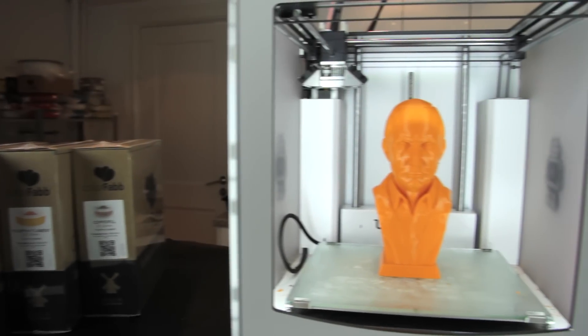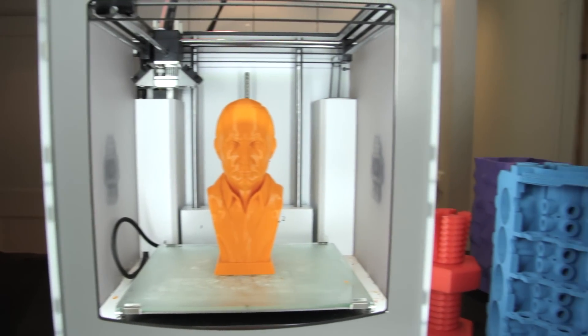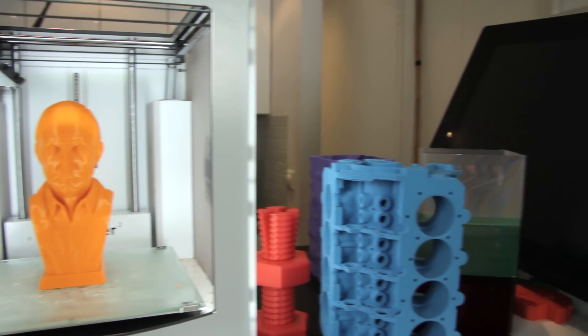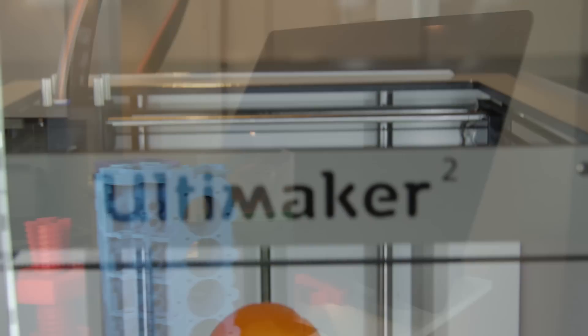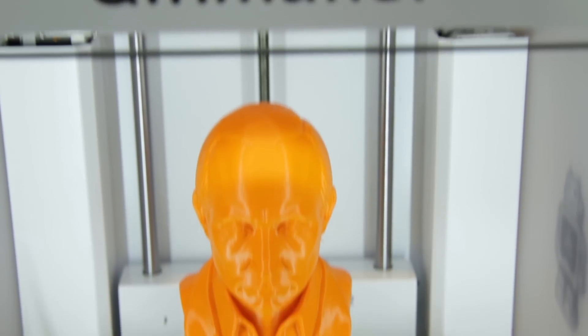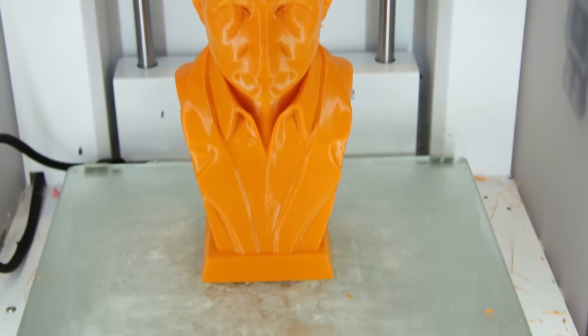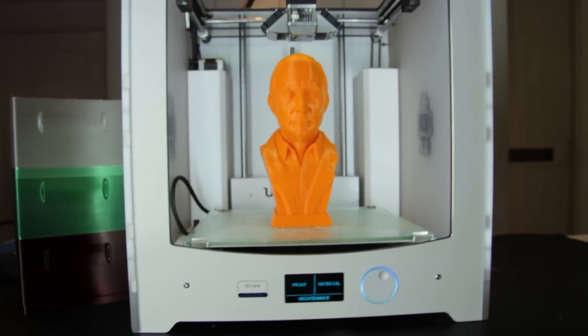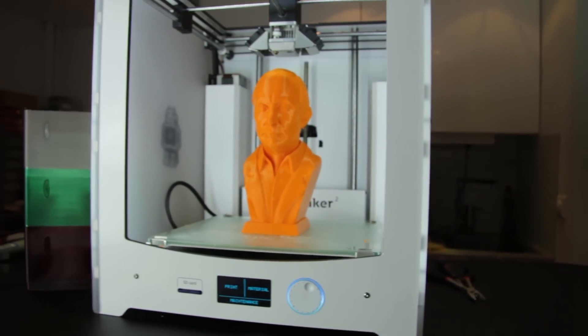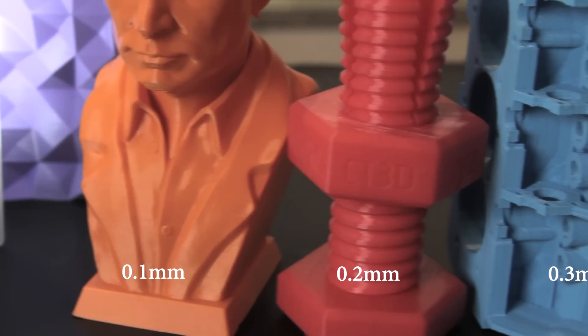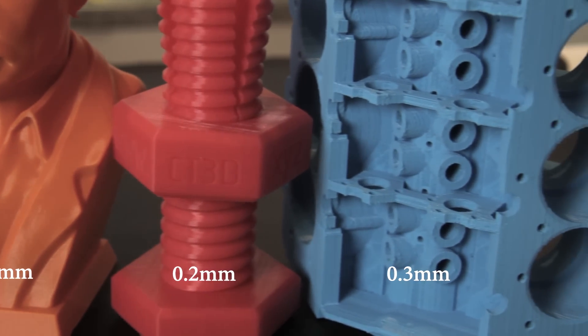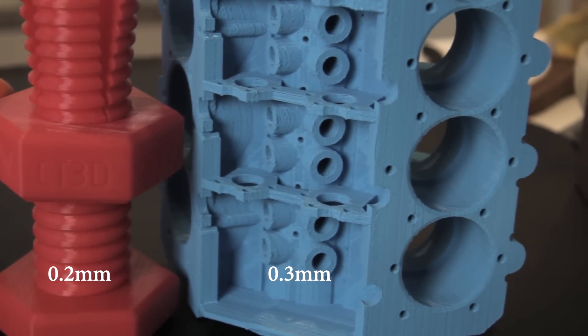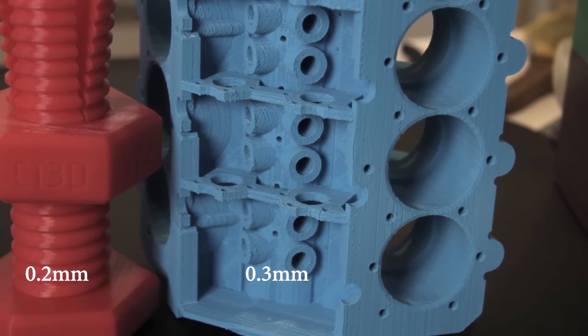The Ultimaker 2 is an FDM or FFF 3D printer. It has a very efficient build volume of 230 x 225 x 205 mm. That's 10.6 liters of print volume. It has a variable layer thickness between 0.02 mm to about 0.3 mm.